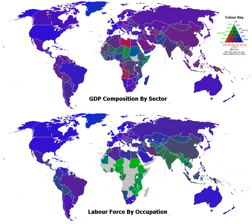Historically, certain manufacturing industries have gone into decline due to various economic factors, including the development of replacement technology or the loss of competitive advantage. An example is the decline in carriage manufacturing when the automobile was mass-produced. A recent trend has been the migration of prosperous, industrialized nations towards a post-industrial society.